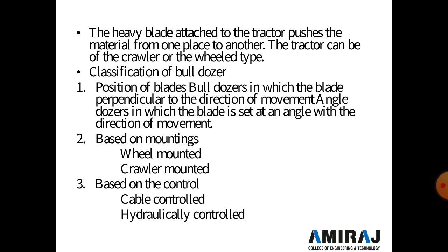The classification of bulldozers is divided into three parts: first, by position of the blade — a straight bulldozer has the blade perpendicular to the direction of movement, while an angle bulldozer has the blade set at an angle. Second, based on mounting, divided into wheel-mounted and crawler-mounted. Third, based on control, divided into cable control and hydraulic control, where hydraulic jacks and pipes are used for operation.